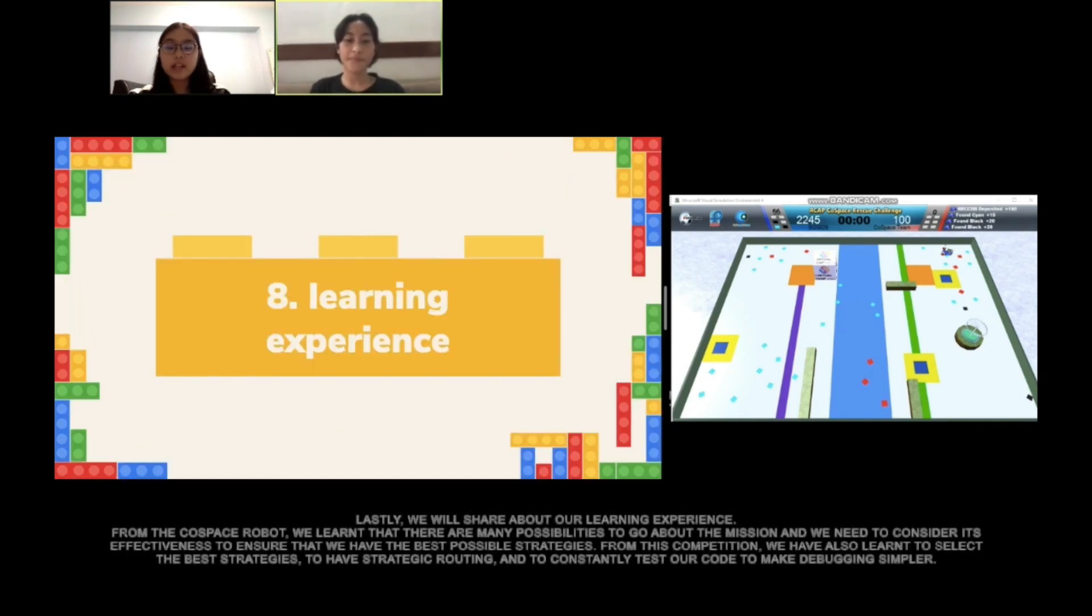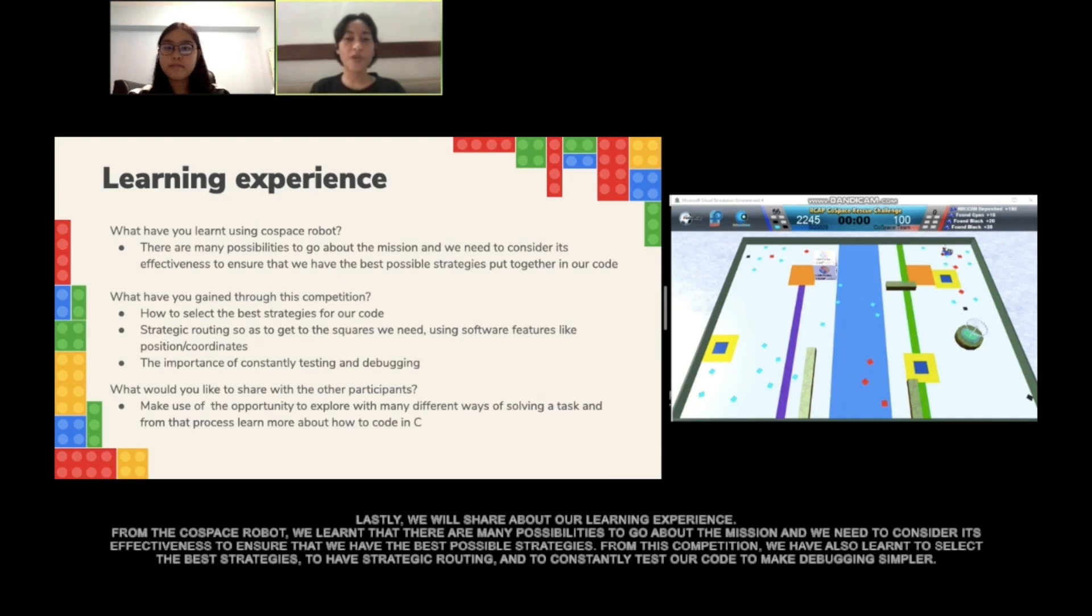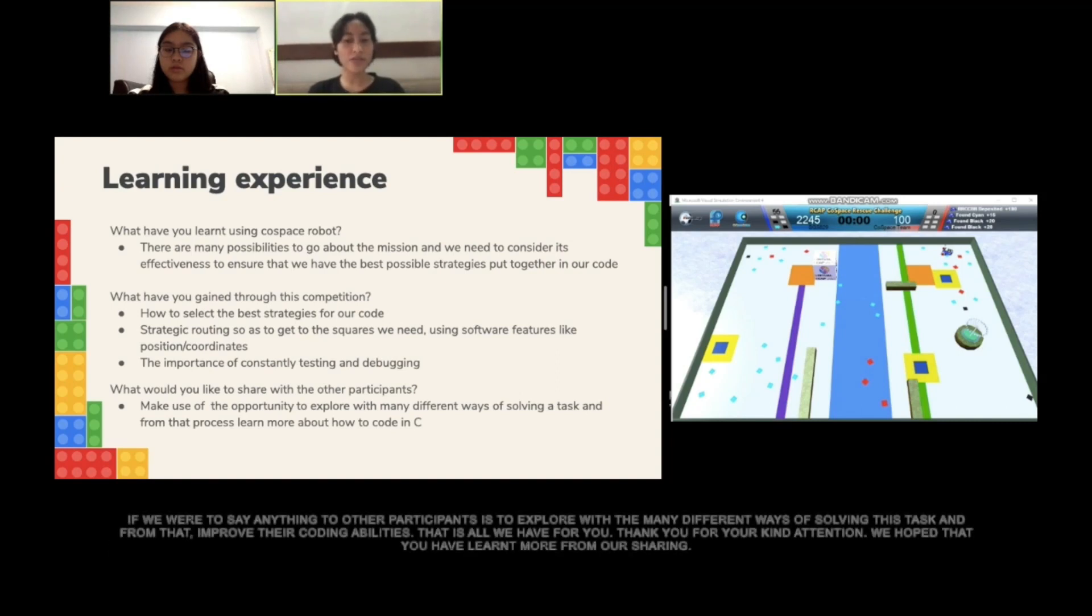Lastly, we will share about our learning experience. From the Core Space robot, we learned that there are many possibilities to go about the mission and we need to consider effectiveness to ensure that we have the best possibilities. From this competition, we have also learned to select the best strategies to have efficient routing and to constantly test our code to make sure it is functioning. If we were to say anything to the other participants, it is to explore many different ways of solving the task and from that, improve their coding ability.